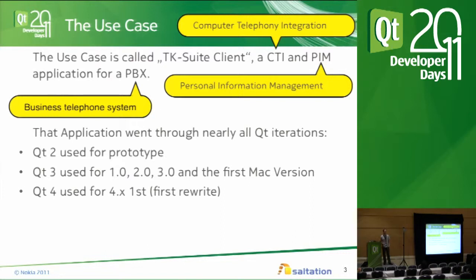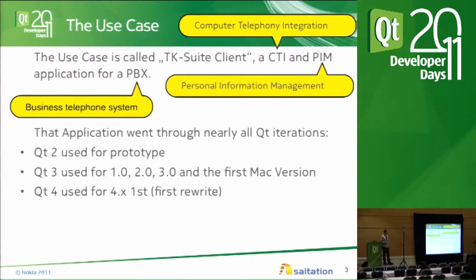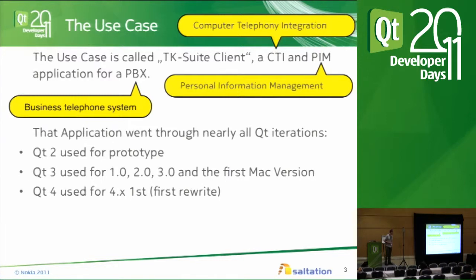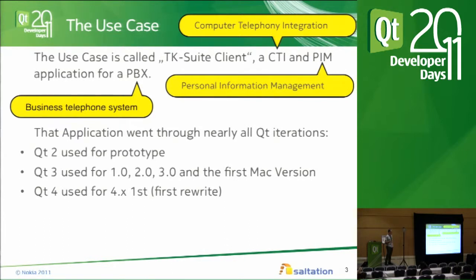CTI means you can dial phone numbers from your computer and you can see incoming calls on your screen. As the application is quite old, it used quite a lot of iterations of Qt. We started with Qt 2 for a prototype, and Qt 3 for the first real versions, and then we made a kind of a rewrite for Qt 4. We were forced to rewrite the application for Qt 3 to Qt 4 — it was quite a process, all the new stuff, the incompatible stuff, and the better stuff.